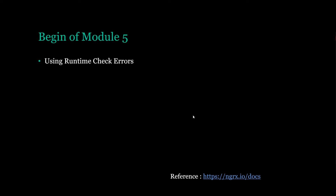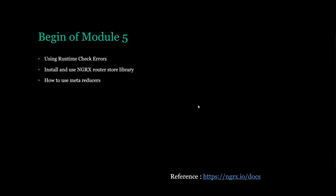In the next module, module five, we'll be setting up a bunch of tools that NgRx gives us. For example, we could set up what's called runtime check errors. We need to set this up within our main app module, and when we do, it will give us errors if we make some common mistakes using NgRx or Redux.